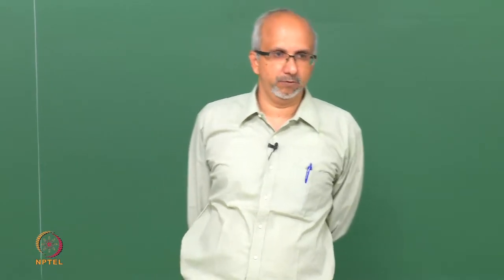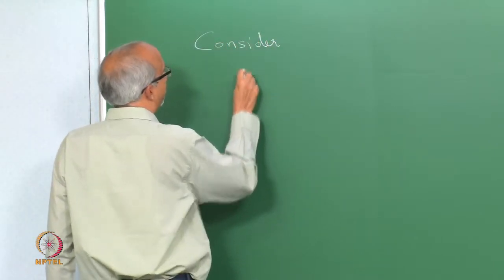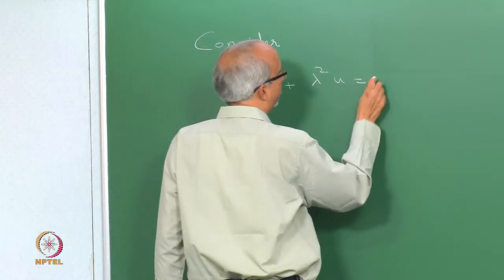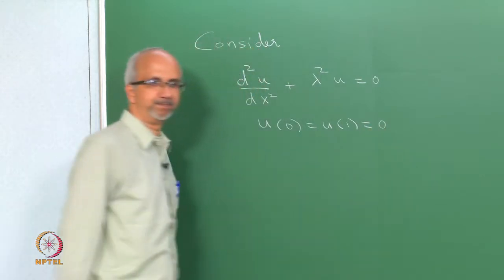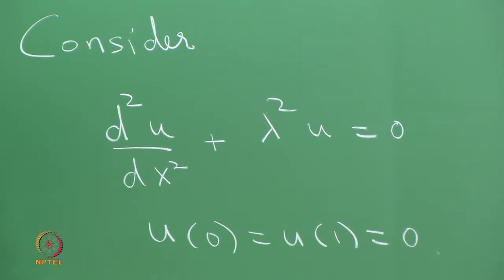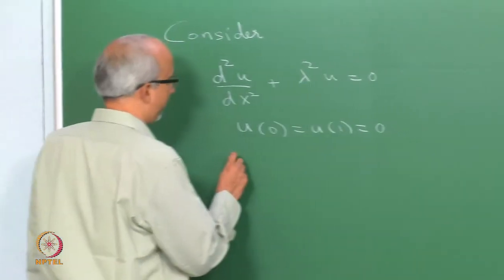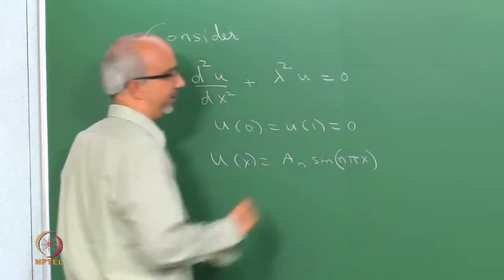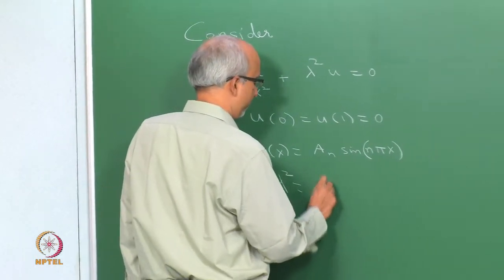We take a classical example to illustrate how an eigenvalue problem looks. Consider the equation d²u/dx² + λ²u = 0, subject to boundary conditions u = 0. The eigenfunction solution is u(x) = sin(nπx).